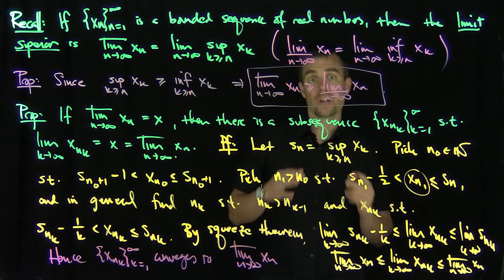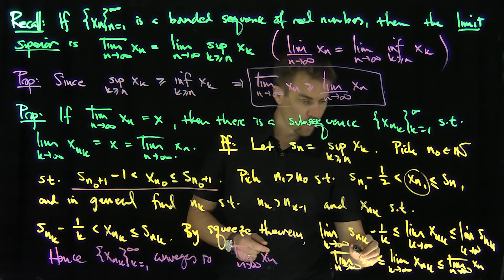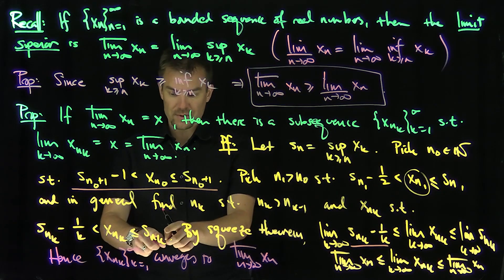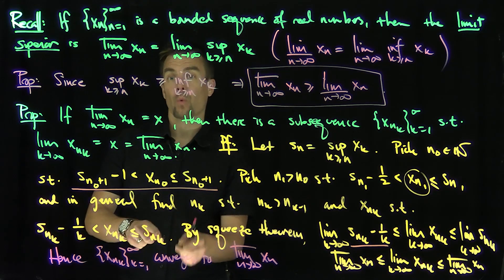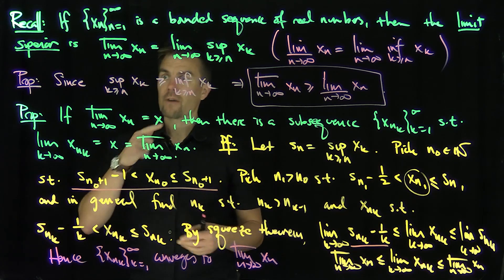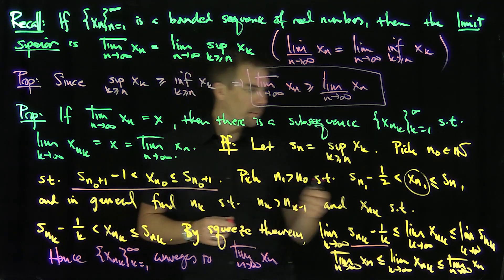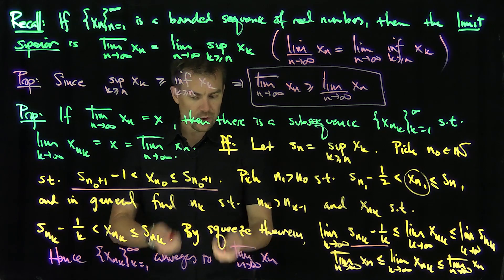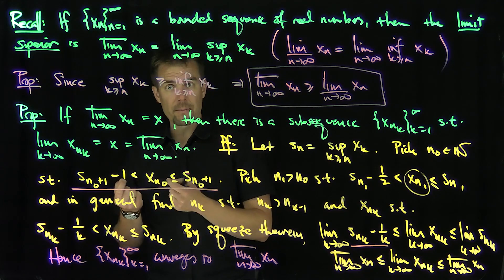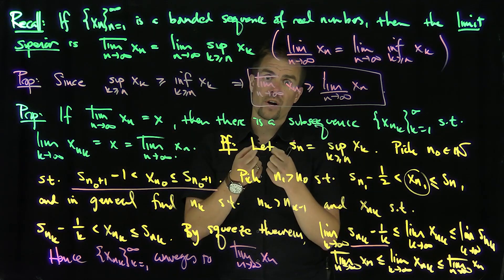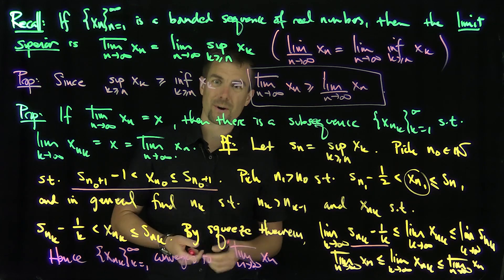I can apply the exact same argument with the lim inf: by infimum approximation, these inequalities flip — you get a plus 1/k on one side, and then pass the limit using the sandwich theorem. So for both lim sup and lim inf, I can always find a subsequence of the original sequence converging to each. And later we'll show that if the lim sup and lim inf are equal to each other, then the sequence has to be Cauchy, and therefore the lim sup and lim inf agree with the ordinary limit. Thank you very much.